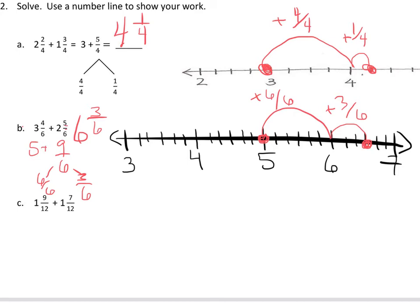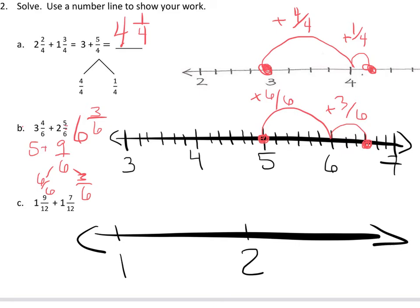I'll leave you to do C, which has to be in twelfths. Your number line, just to get you started on it, could easily go from 1, give yourself a lot of room, 2, and 3, and cut it into twelfths. Moving on to the next one. This is new.